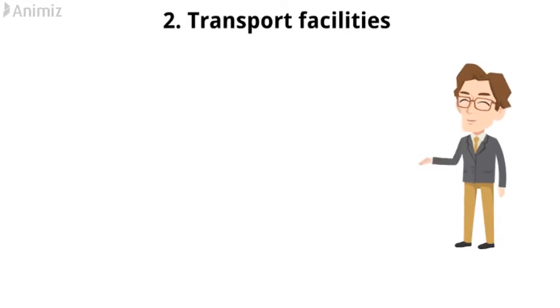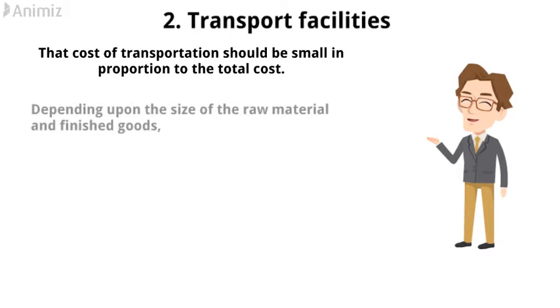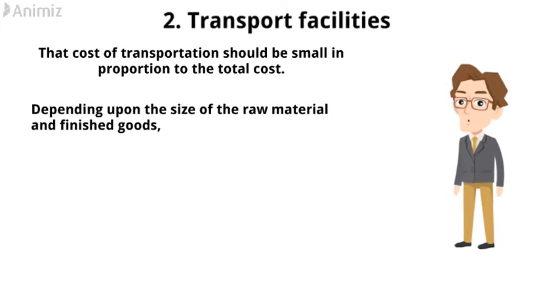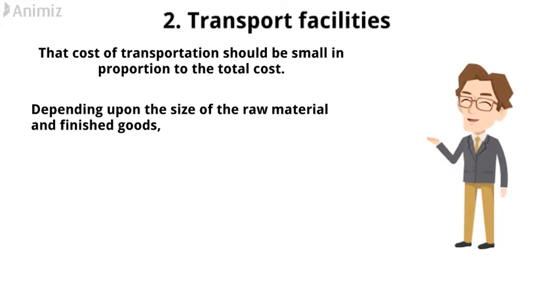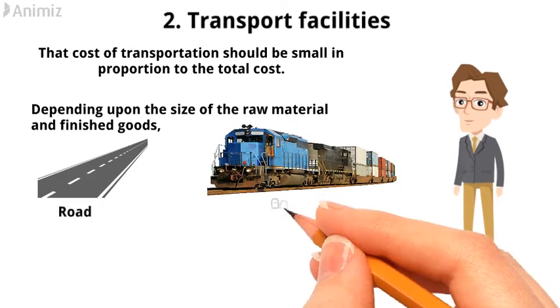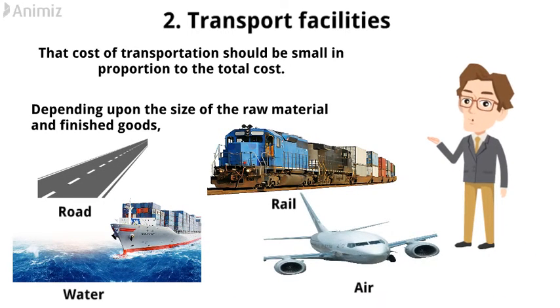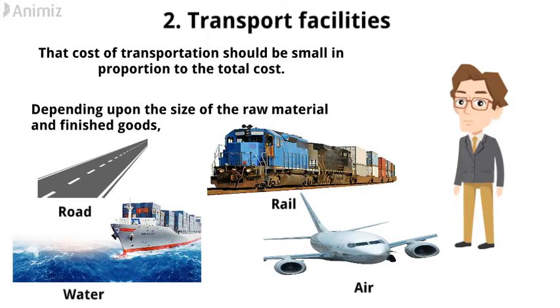Number 2: Transport facilities. One point must be kept in mind that cost of transportation should be small in proportion to the total cost. Depending upon the size of the raw material and finished goods, suitable method of transport like roads, rail, water, or air is selected, and plant location is decided accordingly.